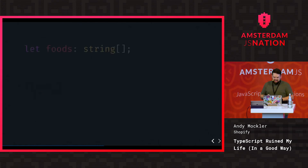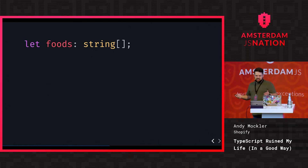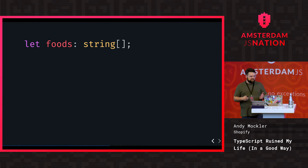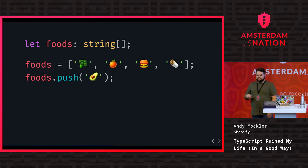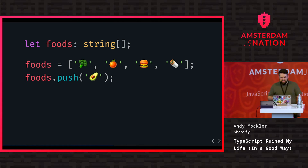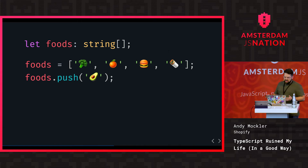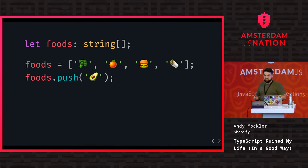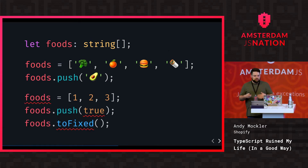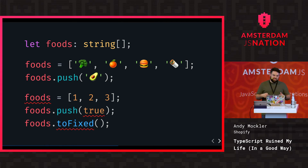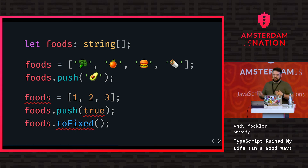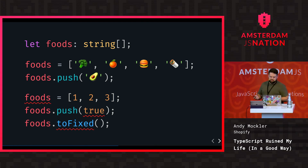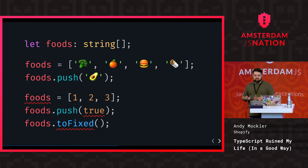For arrays, you can do a very similar thing. If I have a list of strings — for example this foods variable — I can assign it a list of emoji strings. When I push in strings it's happy, and when I call push which is an array method it's happy. But if I try to assign it to a list of numbers, push in a boolean, or call a method that doesn't exist on an array, it's going to flag an error.